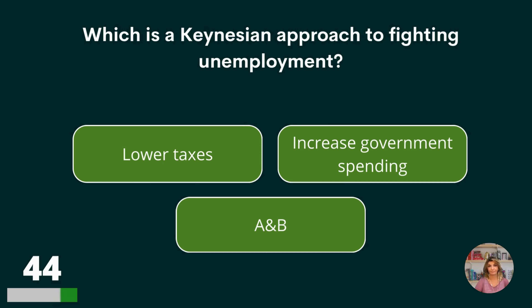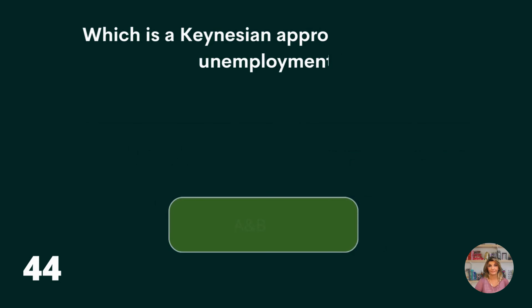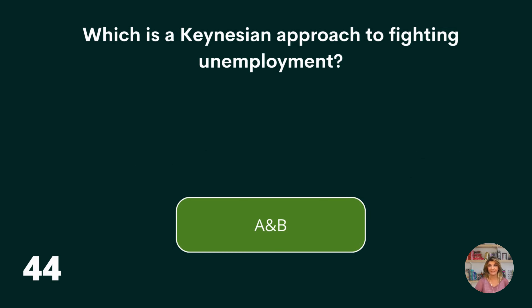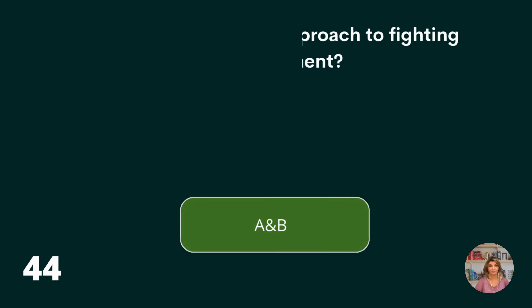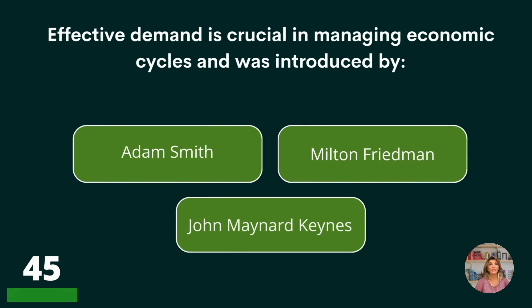Which is a Keynesian approach to fighting unemployment? Lower taxes, increased government spending, or A and B? A and B are correct.